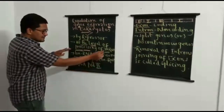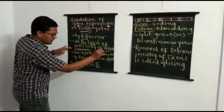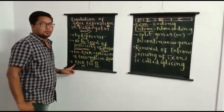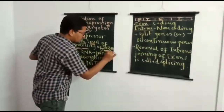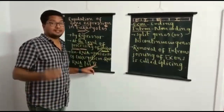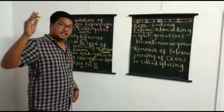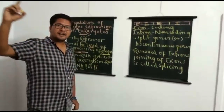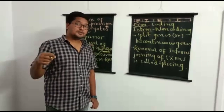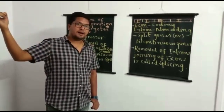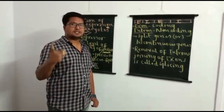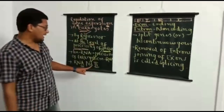In eukaryotes, mRNA synthesis is the function of a particular type of RNA polymerase — RNA polymerase II. Students should remember that in eukaryotes, mRNA is synthesized by RNA polymerase II. This is important because in prokaryotes, all types of RNAs are synthesized by a single type of RNA polymerase, but in eukaryotes, different types of RNAs are synthesized by different RNA polymerases.